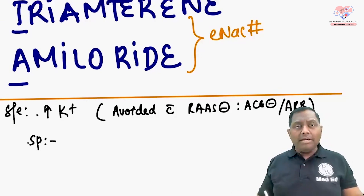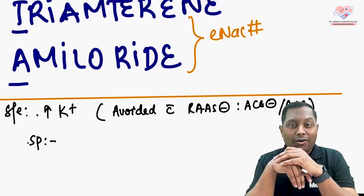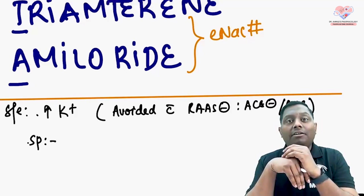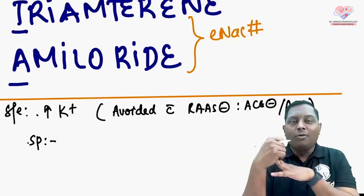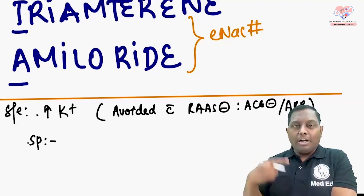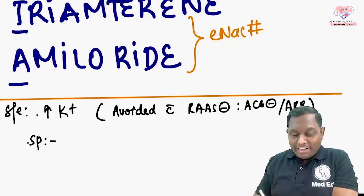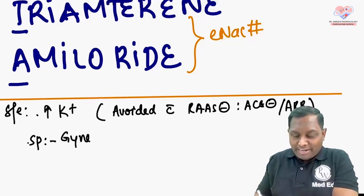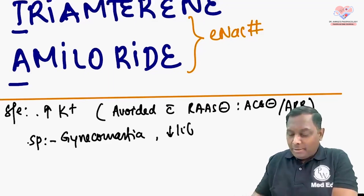Spironolactone has anti-androgenic properties due to its metabolite canrenone (and 7-alpha-spironolactone). This metabolite is an enemy of androgens — your male hormones — so spironolactone can cause gynecomastia and decreased libido.